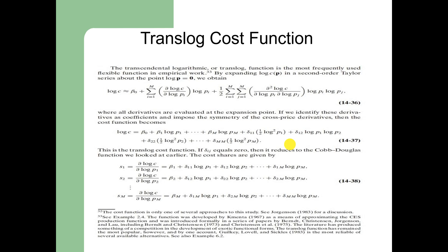If sigma_ij equals zero, then this function reduces to the Cobb-Douglas function that we have studied in economics and mathematical economics. The cost share equations are given by 14.38 — there are a number of equations starting from s_1, s_2, up to s_m. So s_1 is the share of input 1 in the total cost, s_2 is the share of input 2 in the total cost, and s_m is the share of the mth input in the total cost.